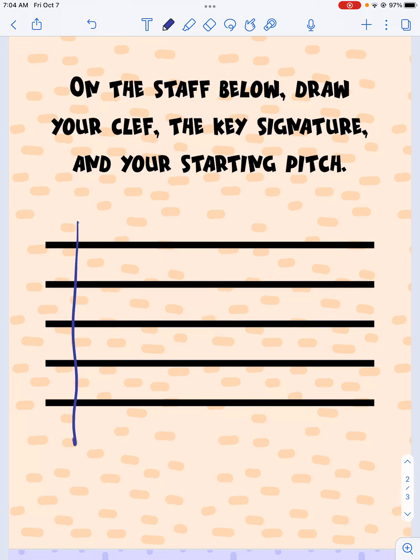So straight line down, little loop at the top, big loop at the bottom, cute little tail like that. If your treble clef stinks, that's okay.